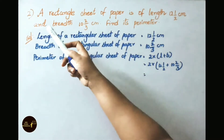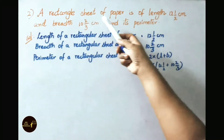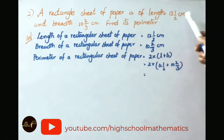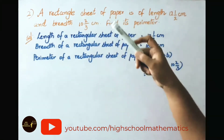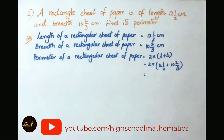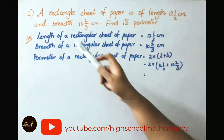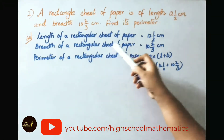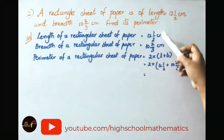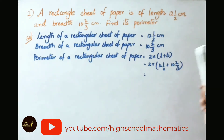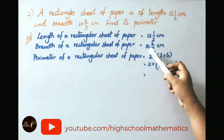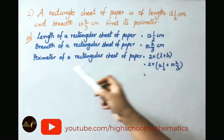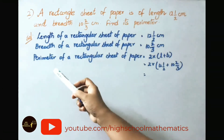See now the second question. A rectangular sheet of paper is of length 12 and a half centimeters and breadth 10 and 2 by 3 centimeters. Find its perimeter. Let us see the solution now. Length of the rectangular sheet of paper equals 12 and 1 by 2 centimeters. So we have to find the perimeter.